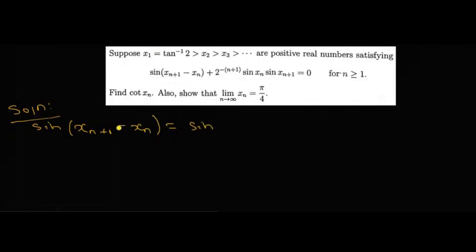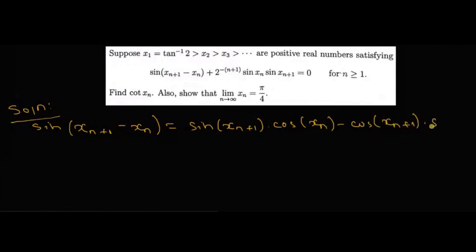sin(x_{n+1} − x_n) equals — using the formula sin(a − b) = sin a · cos b − cos a · sin b — I'm going to apply the same formula: sin a · cos b minus cos a · sin b.